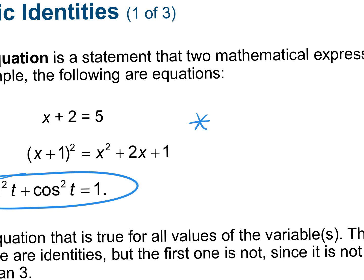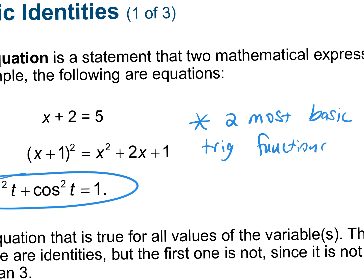Write this down: the two most basic trig functions are sine and cosine. So when we are simplifying, when we're breaking down, you want to change everything in terms of sine and cosine. This will make sense in a minute. I'm going to go through some steps you should do in your head to make this process a little easier.